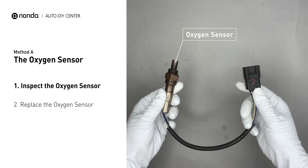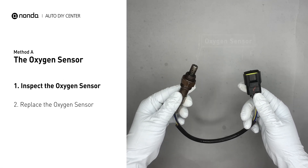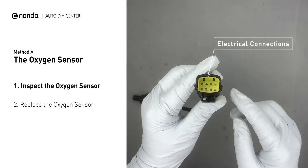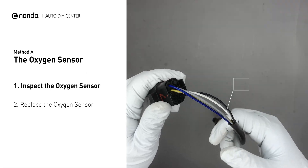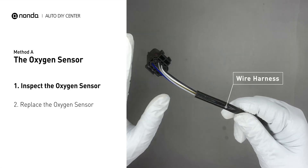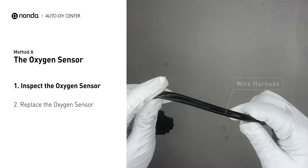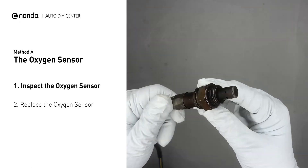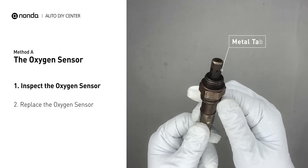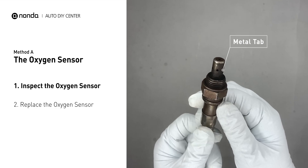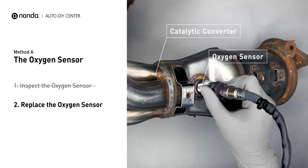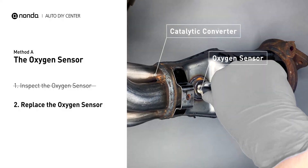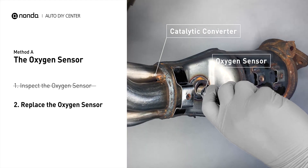Visually check the oxygen sensor's electrical connections, wire harness, and metal tabs for any damages. If damages are found, then replace the oxygen sensor.